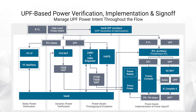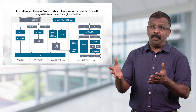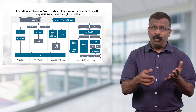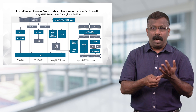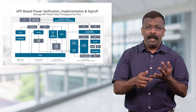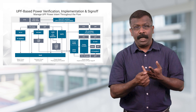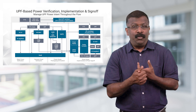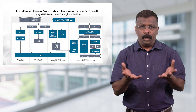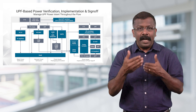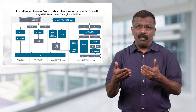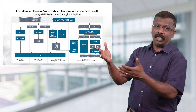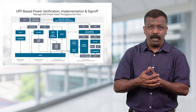UPF generated for a design needs to work across all phases of a typical RTL to GDS flow, which includes RTL design, implementation, verification, and sign-off. We cannot afford to have multiple UPF for different aspects of the flow — for example, a sign-off UPF versus an RTL UPF.